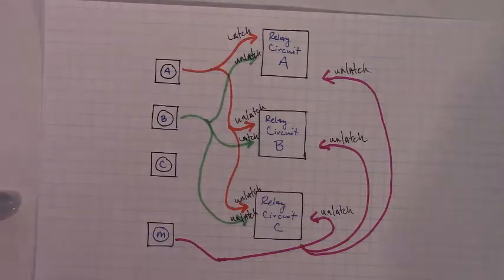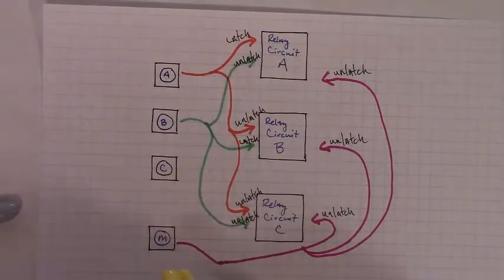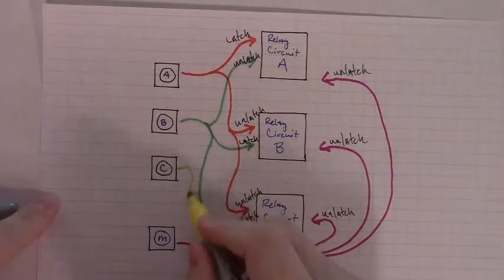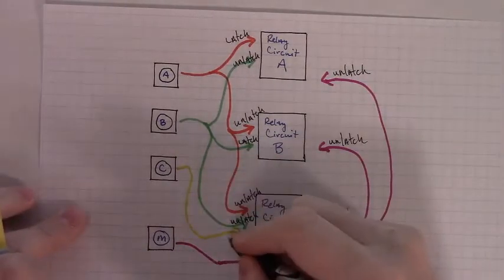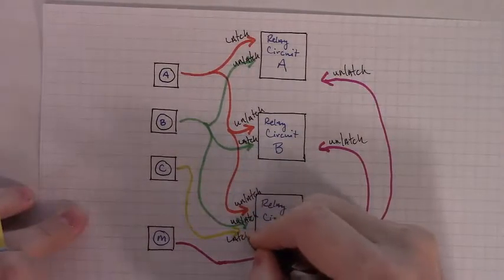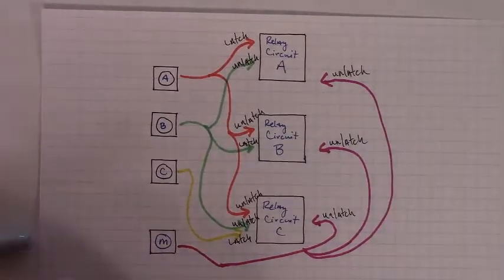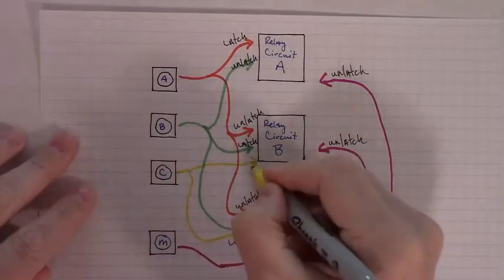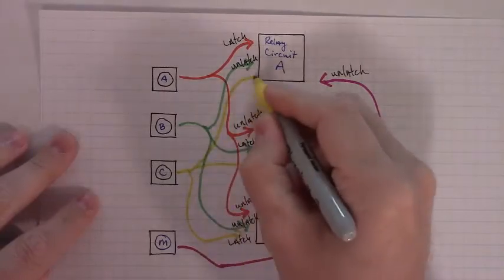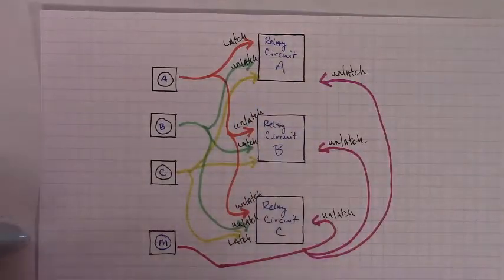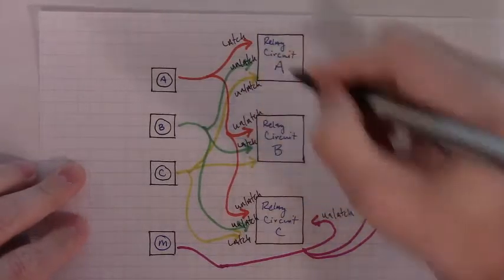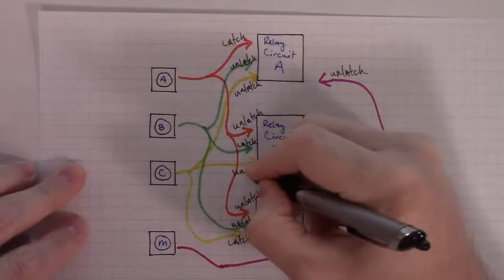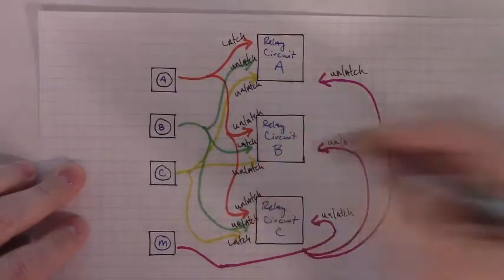And then the final button, C, when we push it, we want it to come down and latch relay circuit C. We want this to be a latch event, while at the same time, unlatching B and unlatching A. Like that.